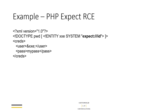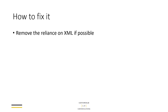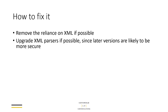Most of these fixes should be fairly obvious. The first is: if you can, don't use XML. If you haven't written your system yet and are wondering about using XML, the answer is probably don't — it's so flexible and has so much functionality that it's become a massive attack surface. If you don't need to use it, don't use it.